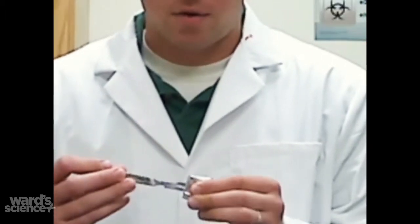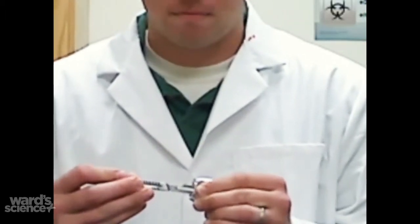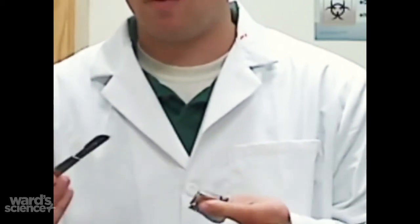Next, you're going to take the scalpel blade. You're going to hold it with your two fingers and you're going to insert the handle of the blade. It clicks right in nice. Now you can remove the scalpel from the packaging and dispose of the foil.